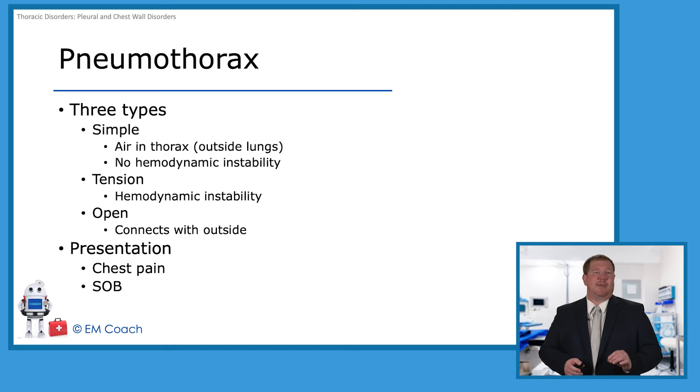Tension is going to be when they have hemodynamic instability because that pleural space has filled so much with air that's not escaping. It's pushing up against that lung in the mediastinal space, and that is then reducing the ability to get preload and create perfusion for the body.